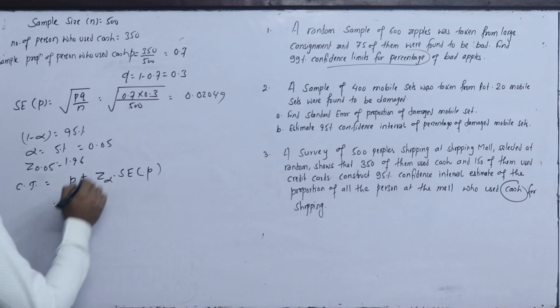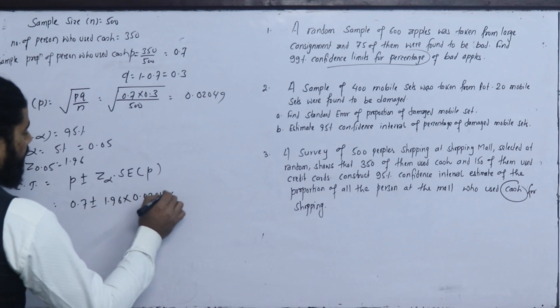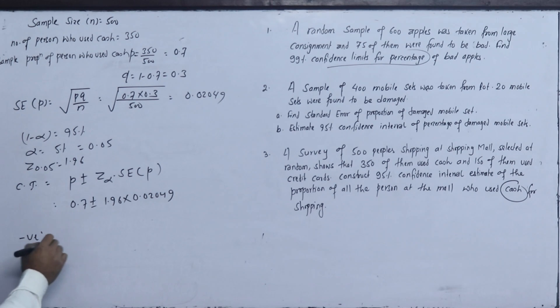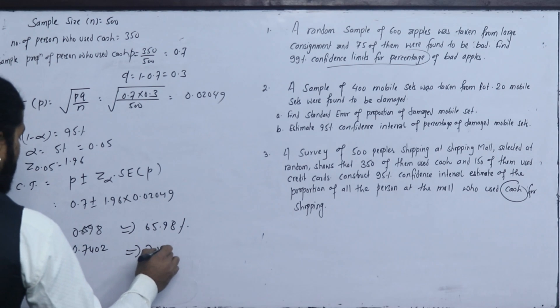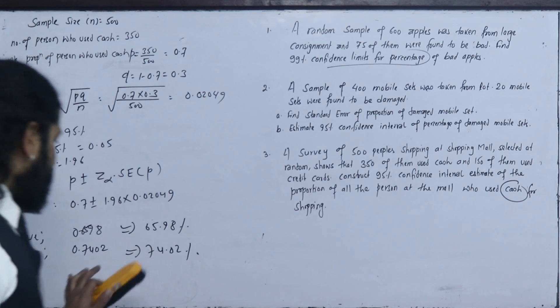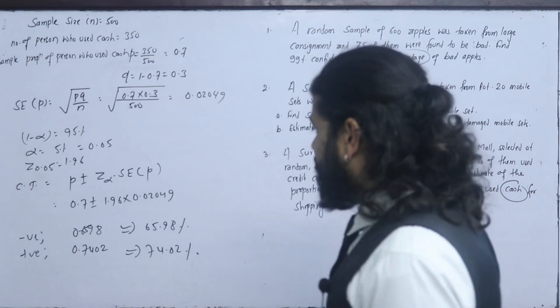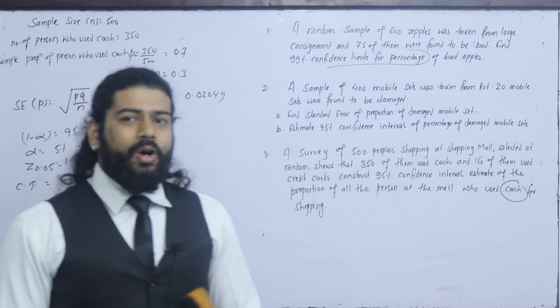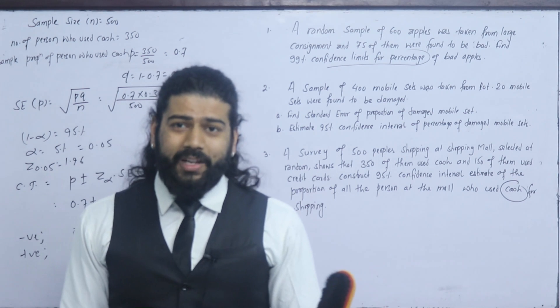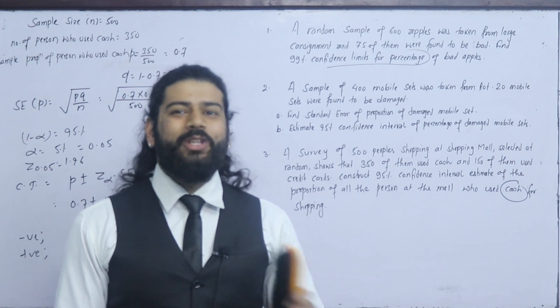Proportion plus minus z alpha into standard error. 0.7 plus minus 1.96 into 0.0209. Taking negative we get 0.6598, taking positive we get 0.7402. As percentage, 65.98 percent to 74.02 percent. In the population, between 65.98% and 74.02% use cash for shopping. This is the estimation about proportion.